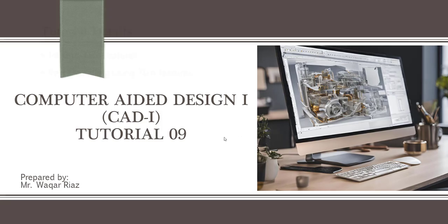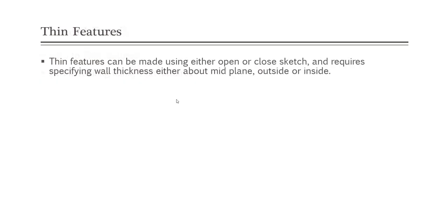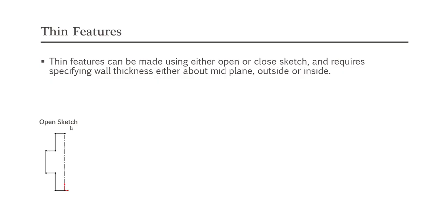In this tutorial we are going to see how we can use thin features in SolidWorks for part modeling. Thin features in SolidWorks do not require a closed sketch — the sketch can be open or closed. It requires only one thing: specifying the wall thickness, which can be set around the mid plane, the outside, or the inside of the sketch. Here is a basic example with an open sketch that we have drawn, and we can simply extrude it using the thin feature by specifying the wall thickness.